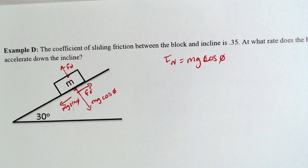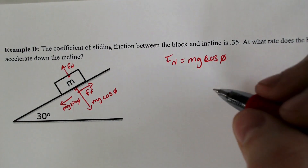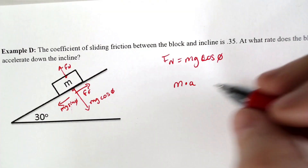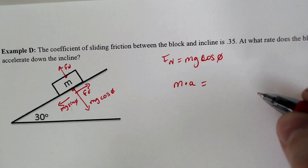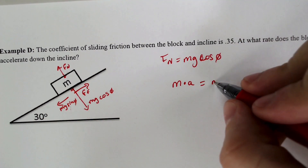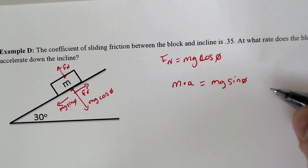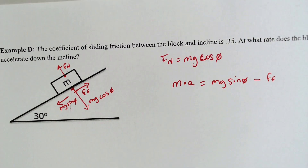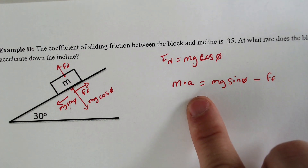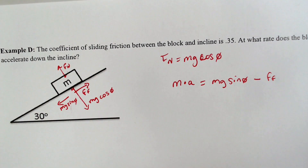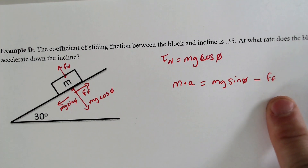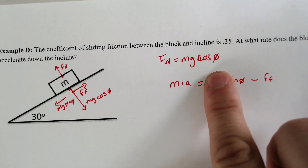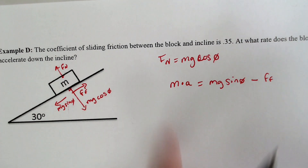There's also gravity going straight down. With that in mind, mass times acceleration for the overall structure equals how quickly it's going down the ramp — mg sine theta — minus the force of friction acting in the opposite direction. So mass times acceleration equals mg sine theta minus the force of friction. The force of friction is the normal force, which is mg cosine theta, times the friction coefficient.